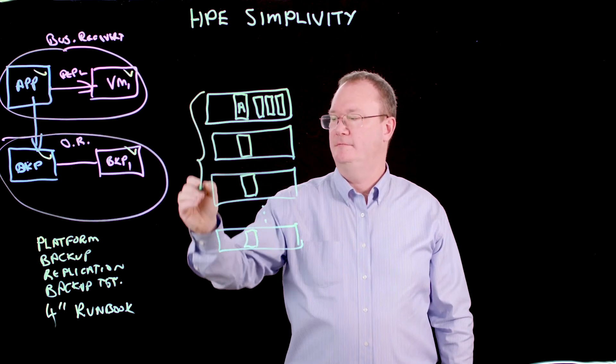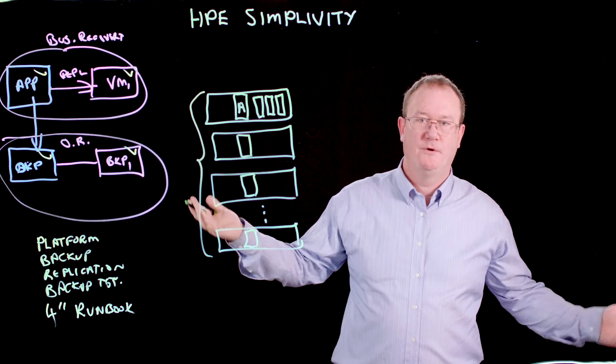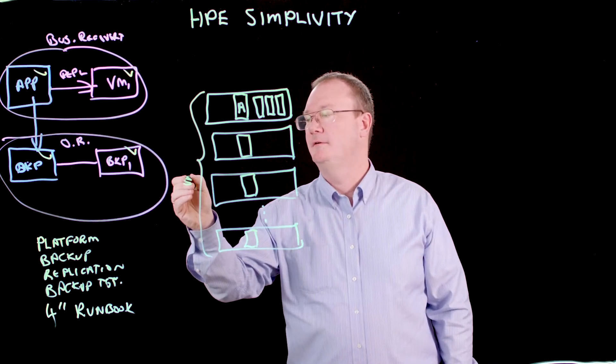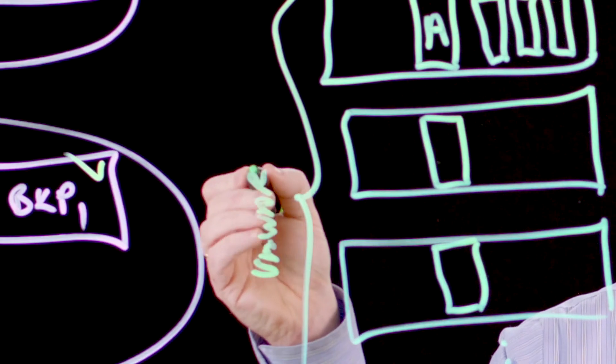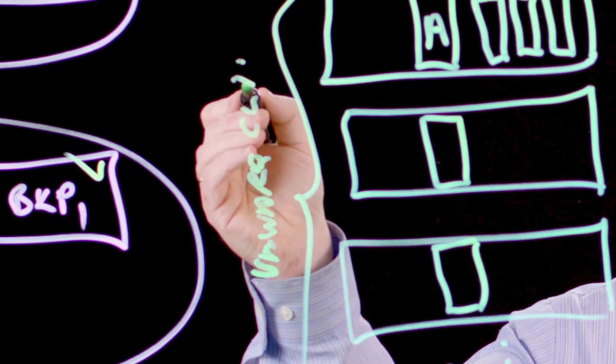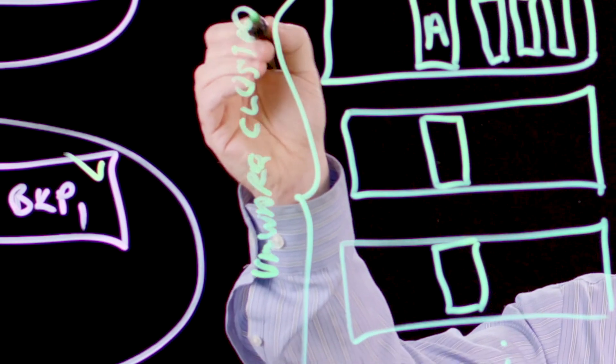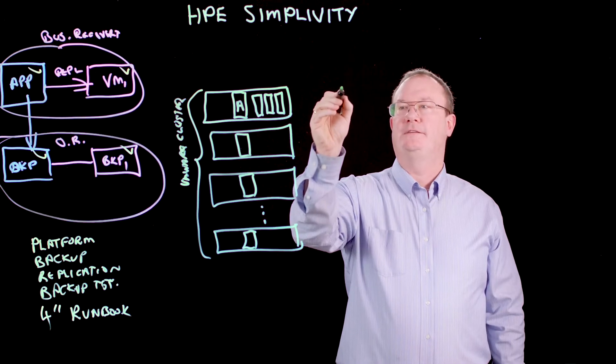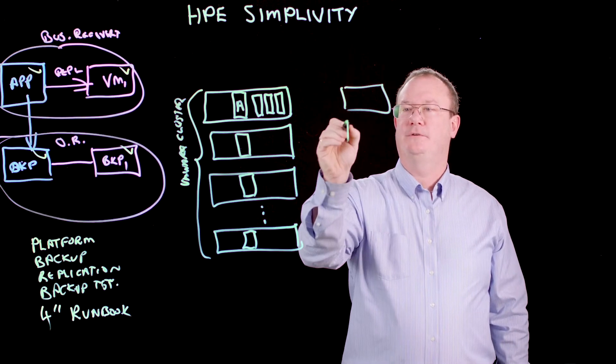So we deploy this as a cluster, in VMware terms a typical VMware cluster. How about our disaster recovery site? It's exactly the same architecture. Maybe we don't need as many nodes in the DR site, we'll just draw a couple in here.